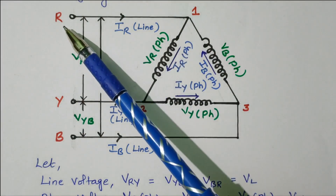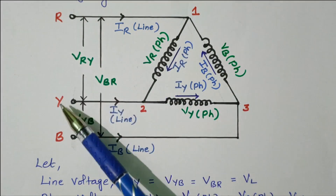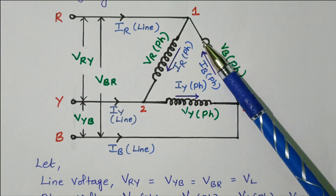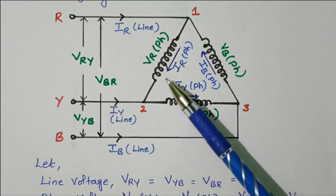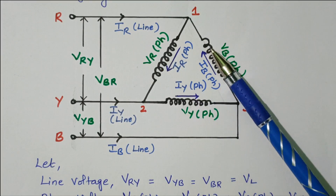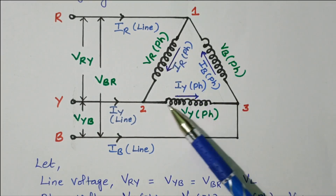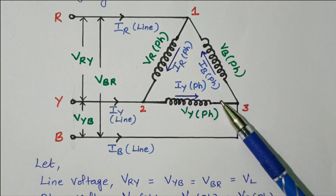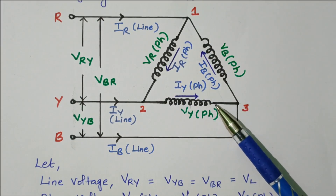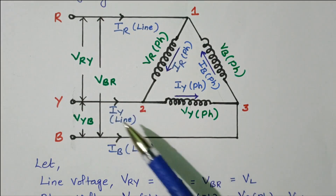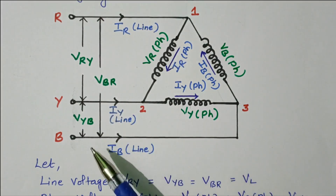So these are the three phases available: R, Y, B. The R phase, B phase, and Y phase. One end of each phase is connected to another end of the next phase, connected end to end, so that it becomes a closed circuit. From that, the tappings are taken: R phase, Y phase, and B phase.